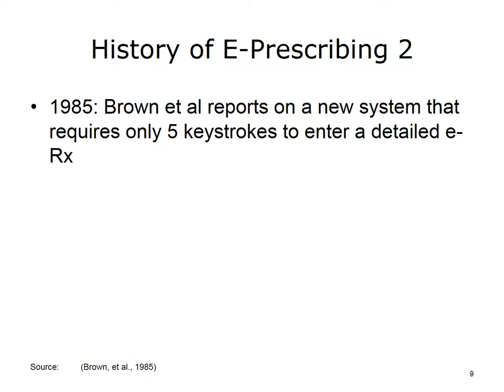Several years later, in 1985, Brown and colleagues published an article about a new system that could handle very detailed electronic prescriptions very efficiently. This system allowed doctors to scroll through a list of drug names, doses, and routes very quickly using arrow keys. While such a system seems intuitive to us now, back then it was a very innovative approach given the early development of computer user interfaces.